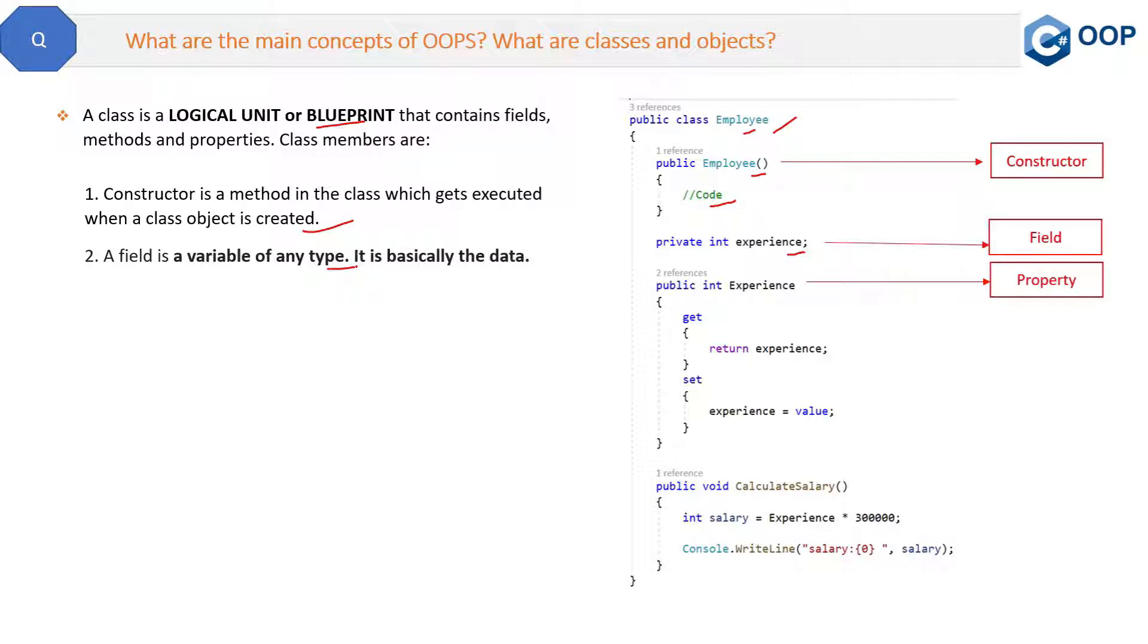The next member of the class is property. What is property? A property is a member that provides help in read and write of the private field. Why we need property when we have field, and why we need property to access fields? This is because of encapsulation, and that we will cover in upcoming questions.